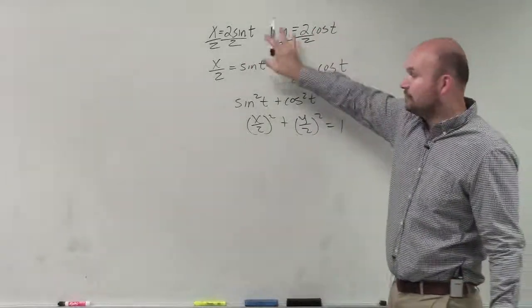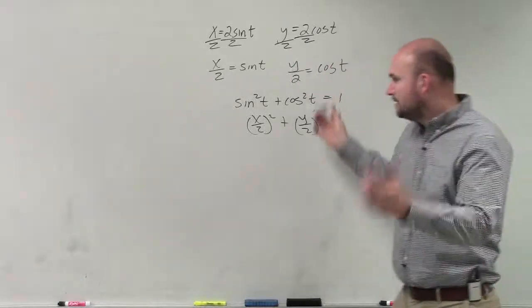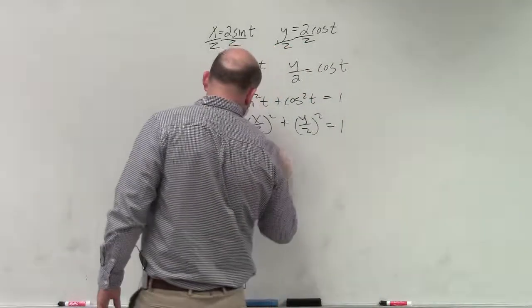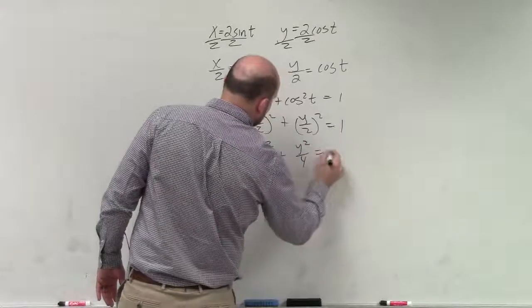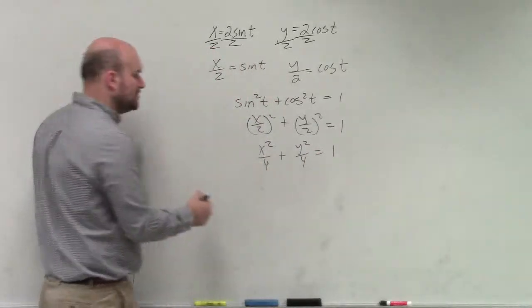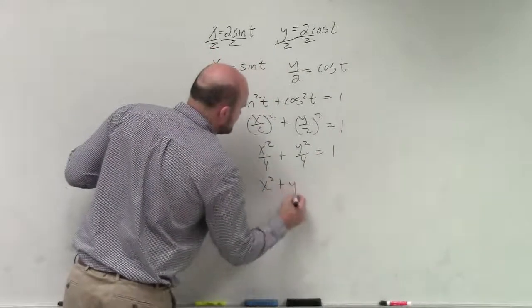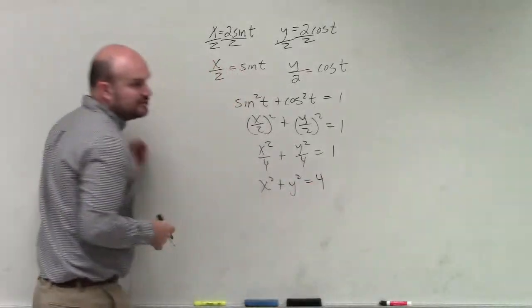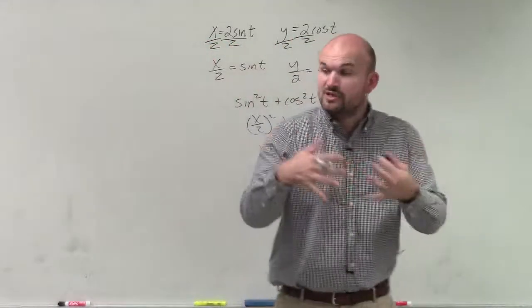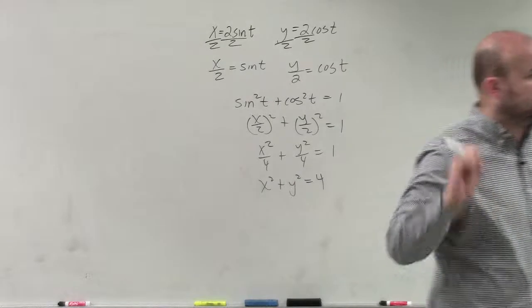You're still just solving for the trig of t, and then you can go ahead and evaluate. So you'd have x squared over 4 plus y squared over 4 equals 1. Multiply by 4 on both sides. You get x squared plus y squared equals 4, which you guys should remember from geometry is the equation of a circle with a radius of 2.